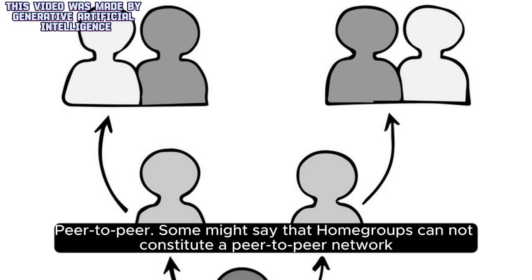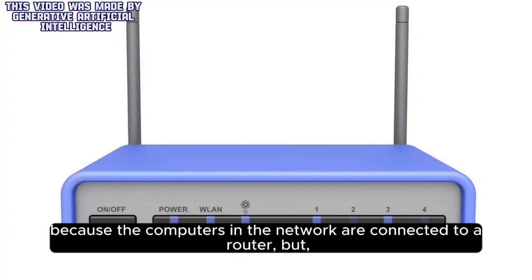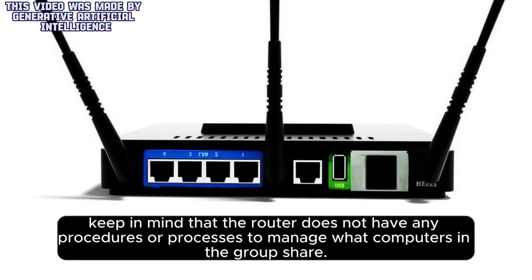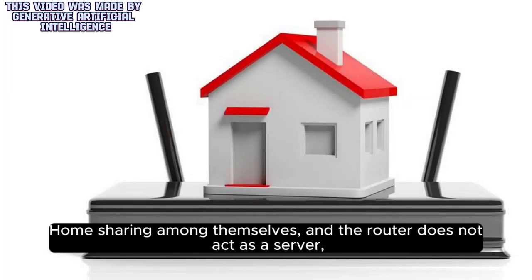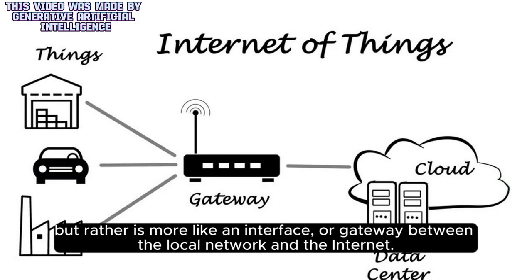Some might say that home groups cannot constitute a peer-to-peer network because the computers in the network are connected to a router. But keep in mind that the router does not have any procedures or processes to manage what computers in the group share among themselves, and the router does not act as a server — it is more like an interface, or gateway, between the local network and the internet.